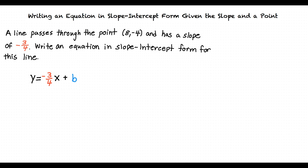As you can see, we still don't have the value for b, or the y-intercept, but we do have a coordinate point of the line. So to solve for b, we must substitute the x and y values for this coordinate into our equation with the slope value we were given. Doing so, our equation will now look like this. Solving this equation out for b, we find that the y-intercept for our line will be 2.